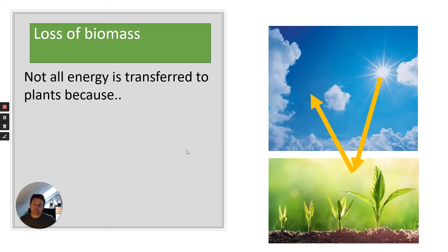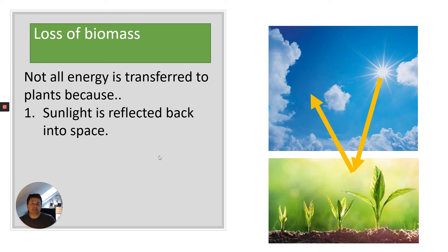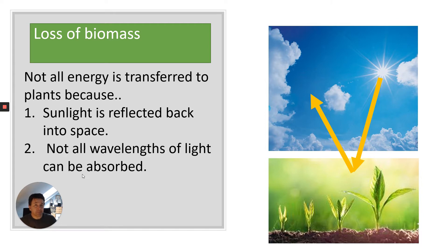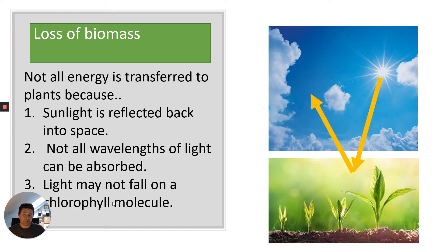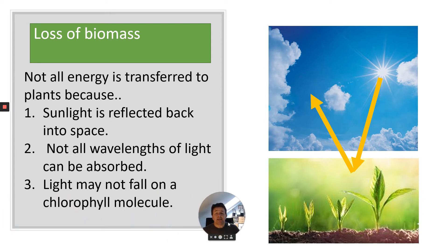Not all energy is going to be transferred to plants because of three main reasons. Firstly, sunlight is reflected back into space — it might hit the atmosphere and be reflected back, or hit the earth and be reflected back into space. Secondly, not all wavelengths of light can be absorbed; light consists of different wavelengths and only certain wavelengths can be used by the plant or chlorophyll. Thirdly, light may not fall on a chlorophyll molecule in the chloroplasts of the plant cells.